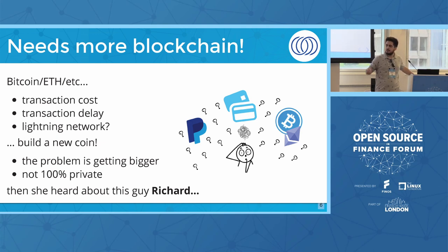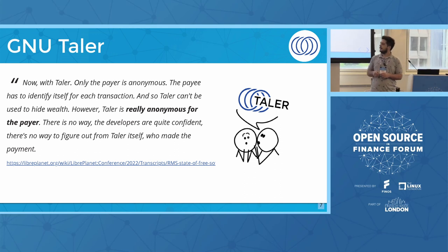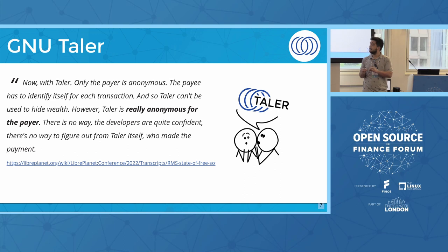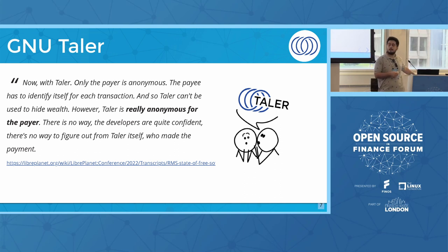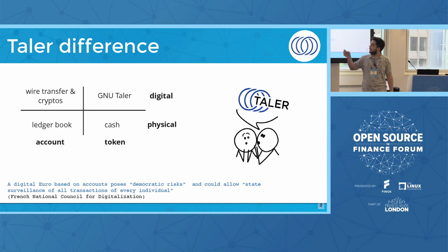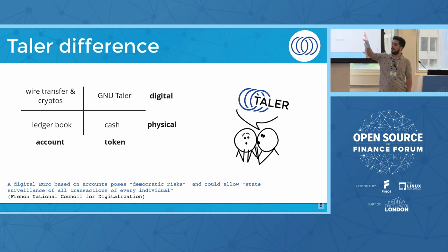She found out about a project called NewTyler that has this feature: it is anonymous and private for the consumer, but not for the one who is selling or providing services — the merchant. She found that Thaler is much more closer to cash than an account-based system. When you have an account-based system in the physical world, you have a ledger with a debit account and a credit account, moving money from one place to another.